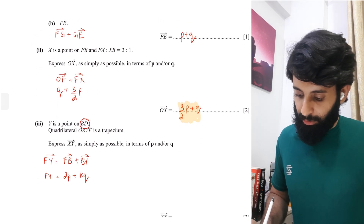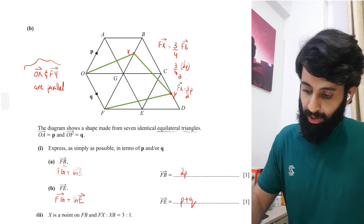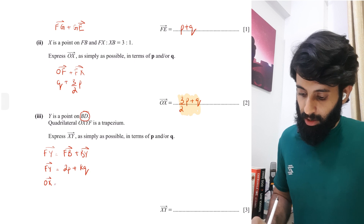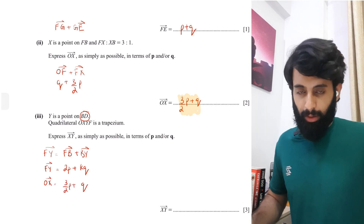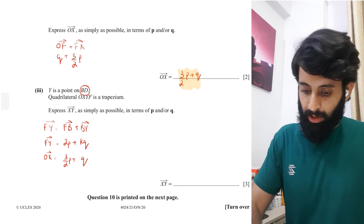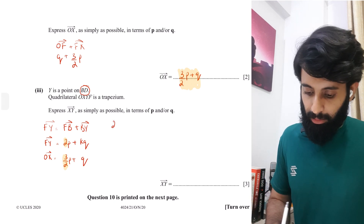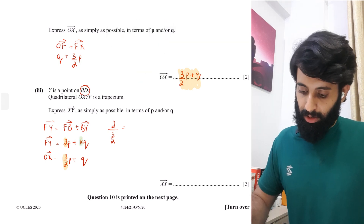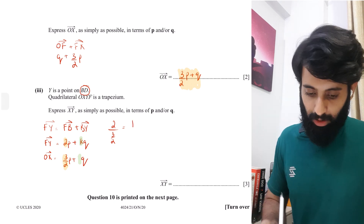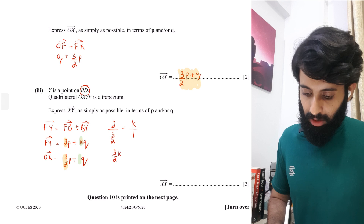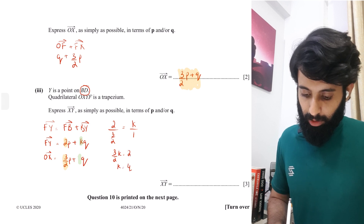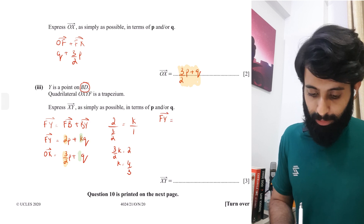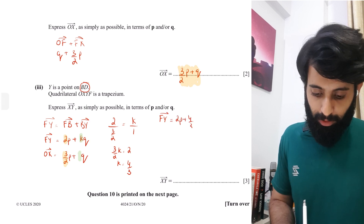Now that I have FY = 2P + KQ, and I know FY is parallel to OX = 3/2 P + Q, I compare the coefficients. Taking the ratio of the P coefficients: 2 divided by 3/2. Taking the ratio of the Q coefficients: K divided by 1. Cross-multiplying: 3/2 × K = 2, so K = 4/3. Therefore FY = 2P + 4/3 Q.